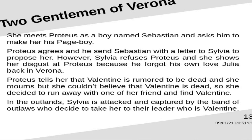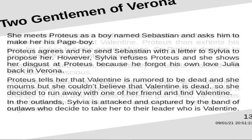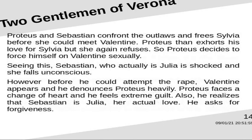Sylvia decides to run away with one of her friends to find Valentin. In the outlands, Sylvia is attacked and captured by the band of outlaws who decide to take her to their leader, Valentin. Proteus and Sebastian confront the outlaws and free Sylvia before she could meet Valentin. Proteus then expresses his love for Sylvia but she again refuses. So Proteus decides to force himself on Sylvia. Seeing this, Sebastian — who is actually Julia — is shocked and falls unconscious.